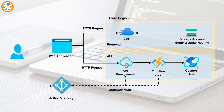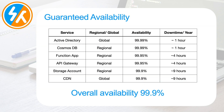Now that we understand the architecture, let's find out the availability service level agreement for each component. Service level agreement, or in short SLA, is the guarantee from the cloud provider for availability. When they cannot maintain the guaranteed availability, they will discount your cloud bill depending on the downtime.